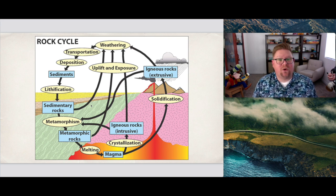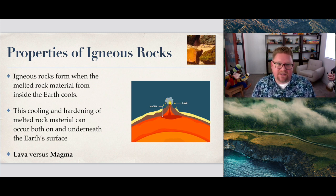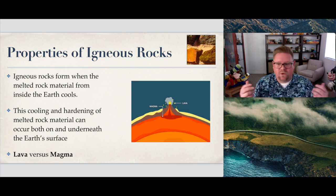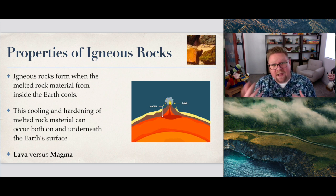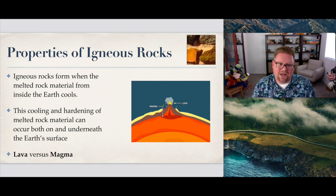Let's talk about some properties of igneous rocks. Igneous rocks form when melted rock material from inside the earth cools. Depending on where that material is exposed, if it's on the surface it can cool immediately — you may have seen volcanoes erupt and that material hitting water and instantly cooling. On the other hand, maybe it has a really long cooling time. It's not uncommon for some rocks to take between ten thousand and a hundred thousand years to cool from their molten state, and they can even be reheated, lengthening that cooling period.